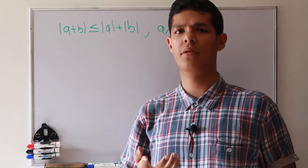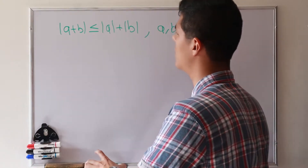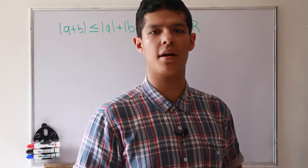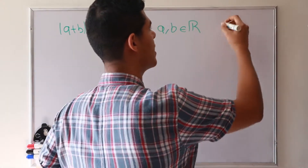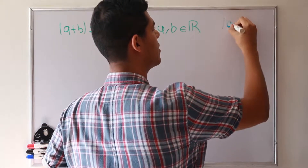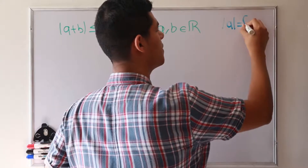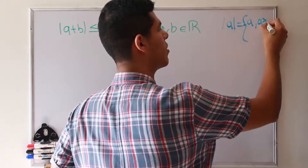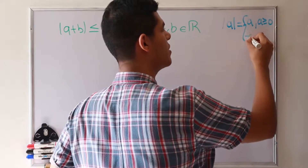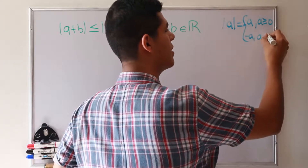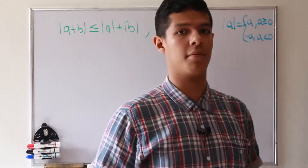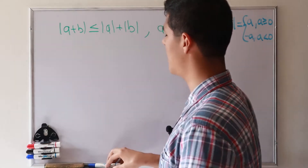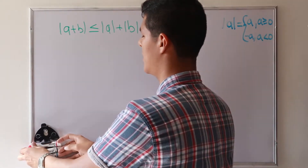When a and b are real numbers. In order to prove that, we need to recall the definition of absolute value. The absolute value of a number equals: a, if a is greater than or equal to zero, or minus a, if a is less than zero.